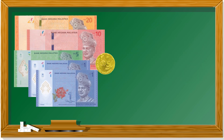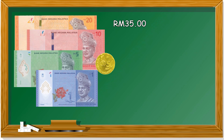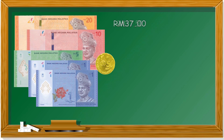So many notes. Let's count. 20 ringgit plus 10 ringgit becomes 30 ringgit, plus 5 becomes 35 ringgit. We have 2 ringgit — 2 notes of 1 ringgit — so it's 37 ringgit. We have done counting the notes. Now, left the coin. We only have 1 coin, which is 50 cent. So we add it in, becomes 37 ringgit and 50 cent.